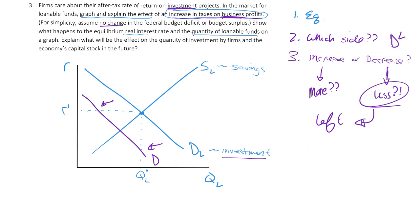And there's my demand for loanable funds. My second one, let's just call this two. And there's a new equilibrium, QL2, R2. We see the interest rate has decreased. Quantity of loanable funds have shifted to the left. So that's what will happen.